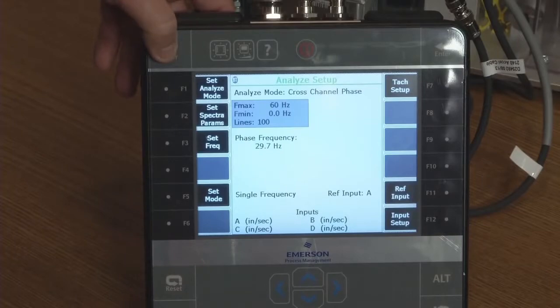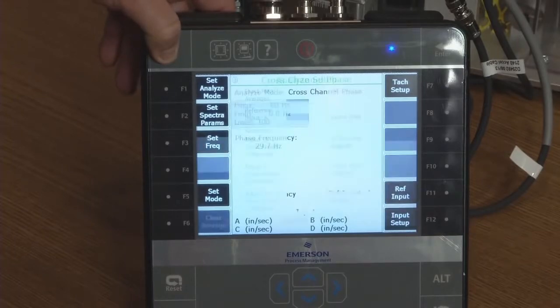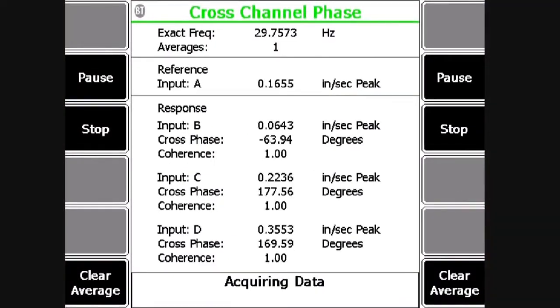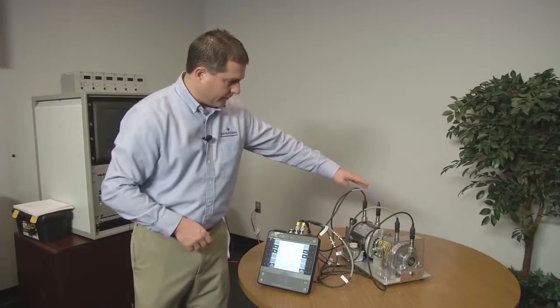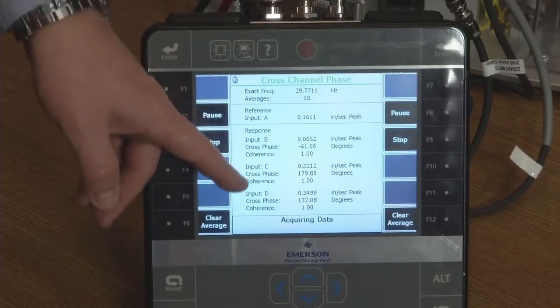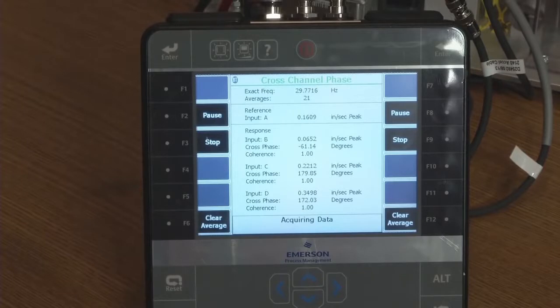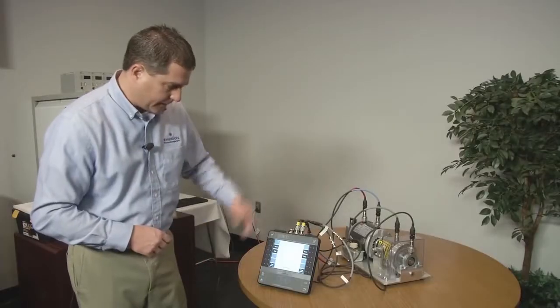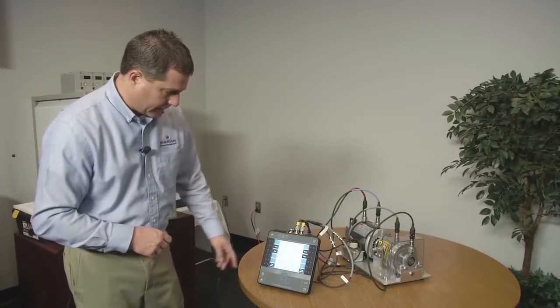And so now let's do the test again here. So now I've got channel A is my reference. And then I'm seeing the cross channel phase and coherence for channels B, C, and D. So my red is A, blue is B, gray is C, black is D. And so you can see my coherence is one for all of them. That means they're all receiving the same vibration from the same source because they're all on the same demo kit here.